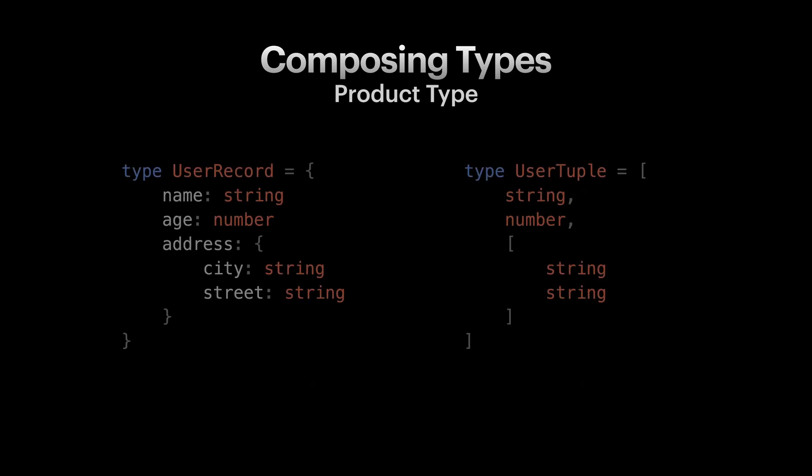In TypeScript we can model the product type in a couple of ways. We can use object type, interface, or tuples to compose other types. For example, we have a product type user record which contains two primitive types under properties name and age, and another nested composite type under address property. We can also model product types using tuples as I'm showing you in user tuple. Both ways are composing types and each can be useful in their own situation.